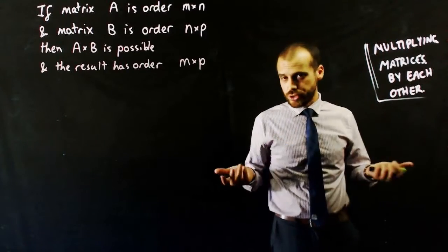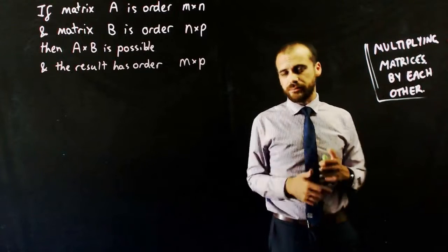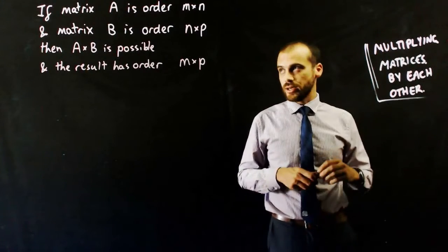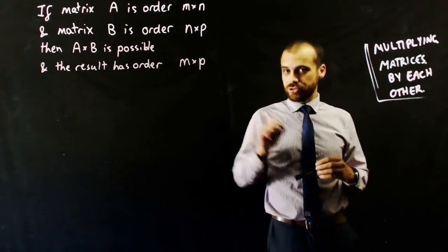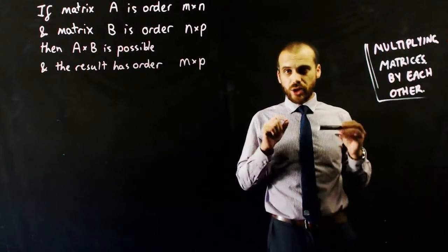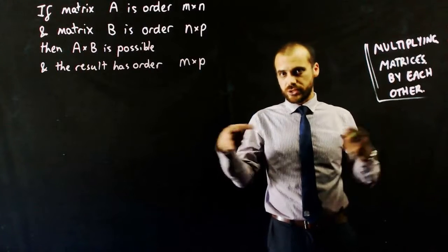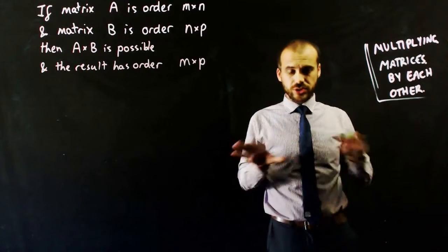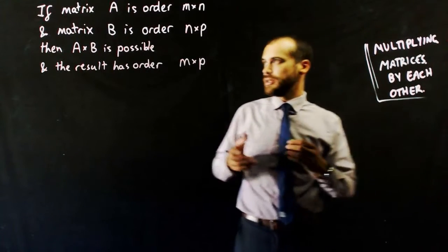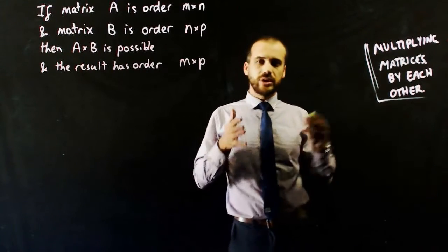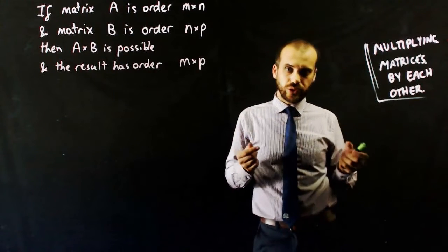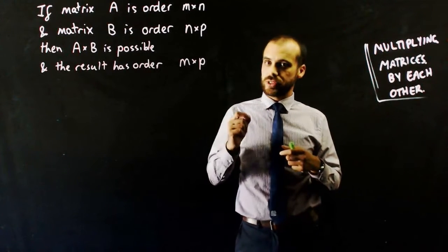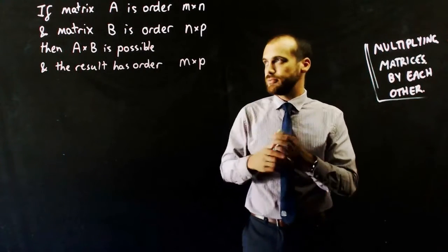With regular numbers, there are no two numbers that you can't multiply together — you can do 3 times 2, you can do 4 times 8. But with matrices, there are only very specific matrices that you can multiply together; other ones you're not allowed to do. It just doesn't happen, in the same way that you can't add matrices of different orders. Now, you can multiply matrices of different orders, but they have to be very special.